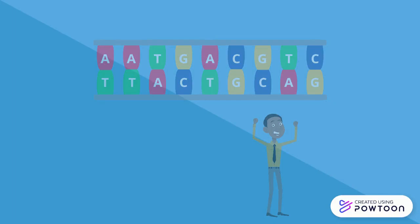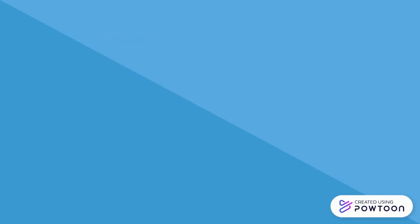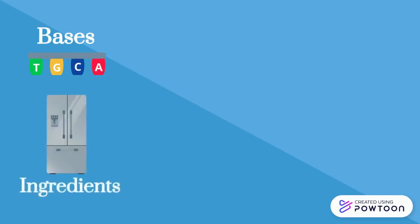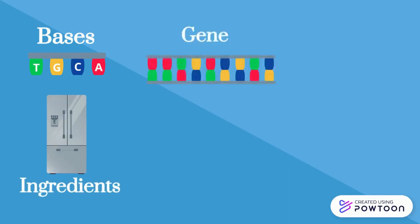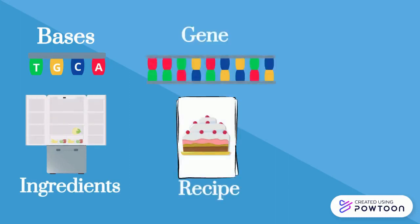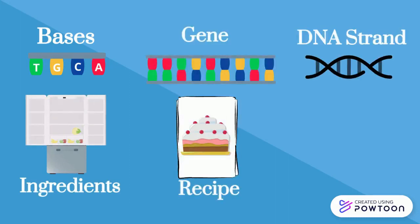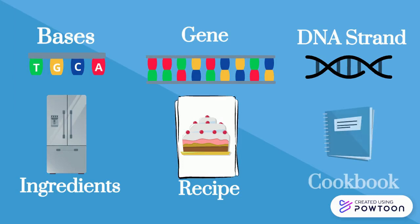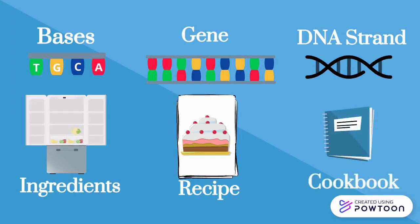A good example to help understand this concept would be to compare each DNA molecule or base to a food ingredient. Using this analogy, we can compare genes to different recipes. A strand of DNA would therefore be considered a cookbook containing many different genes or recipes.